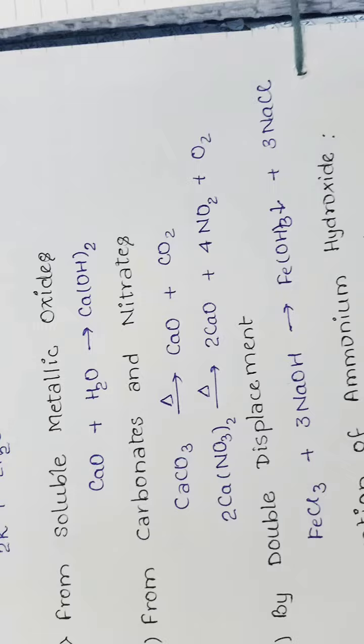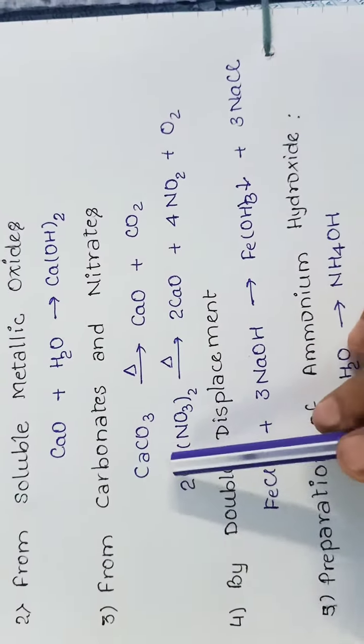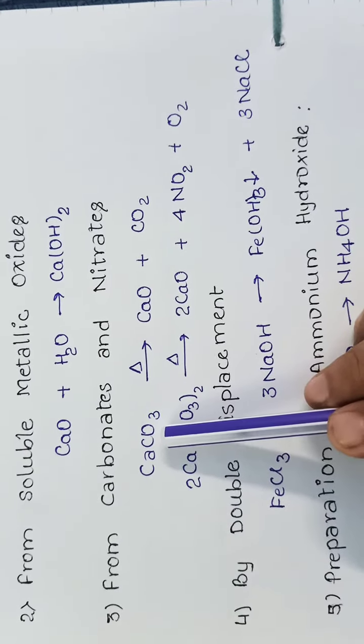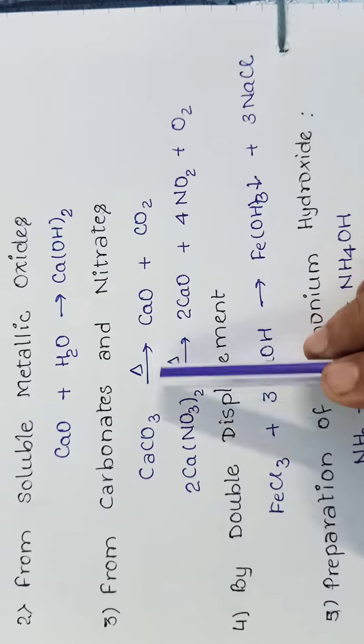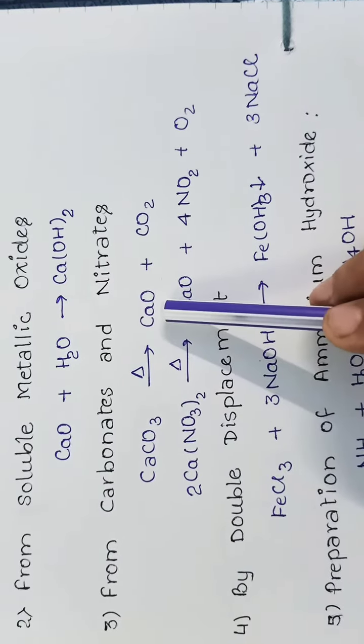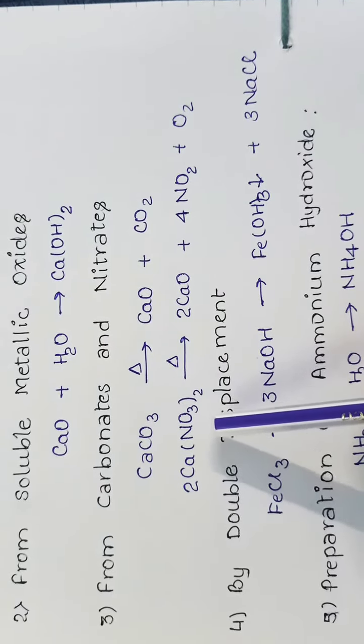Third method: from carbonate and nitrate. We take any metallic carbonate like calcium carbonate. By heating, calcium carbonate gives calcium oxide and carbon dioxide gas. Same in case of calcium nitrate.